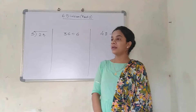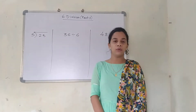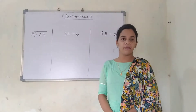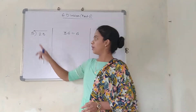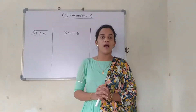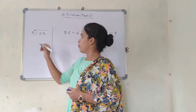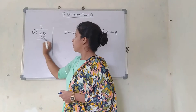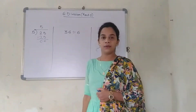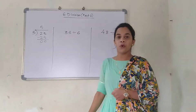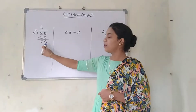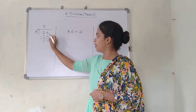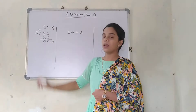On the board it is given that 25 divided by 5. 5 is the divisor and 25 is the dividend. In 5's table, is 25 coming? Yes — 5 fives are 25, so I am going to write 5. The answer will be 0 remainder. Whatever is remaining is called the remainder, and this 5 is called the quotient.